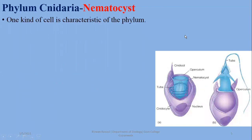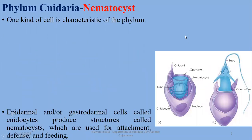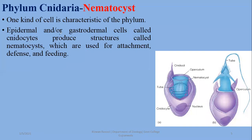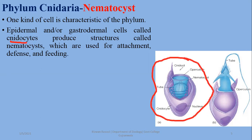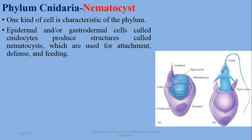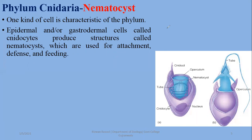Talking about stinging cells, which are a characteristic of the phylum: in their tentacles, there are cells in the epidermis and gastrodermis called cnidocytes. This whole structure is the cnidocyte. The structure projected outward, shown here in blue, is the nematocyst. The stinging cells are cnidocytes, which produce structures called nematocysts. These nematocysts are used for attachment, defense, and feeding. The nematocyst is housed inside the cnidocyte, which is shown as the blue structure.